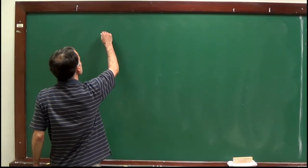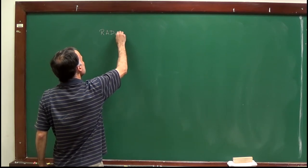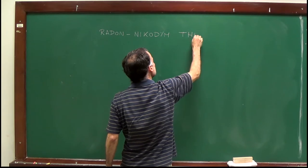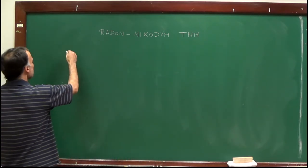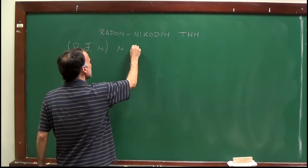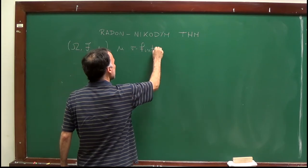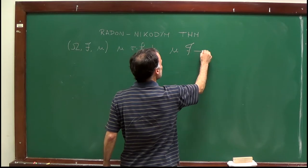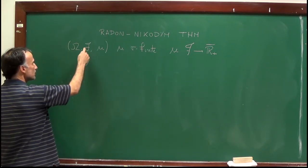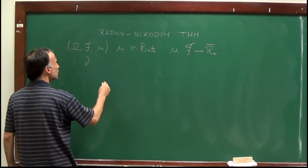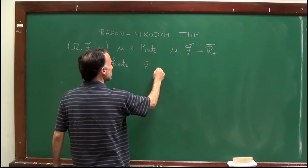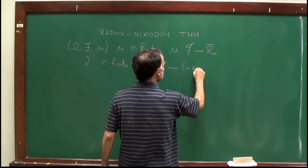Today I will present the proof of the Radon-Nikodym theorem. I will consider some measure space where mu is sigma-finite and non-negative, taking non-negative values. I have also defined on the same sigma-algebra a measure nu which is also sigma-finite but which takes values between minus infinity and plus infinity.